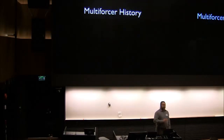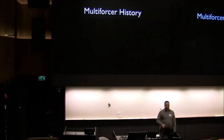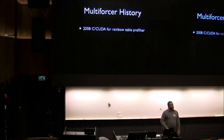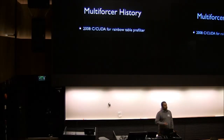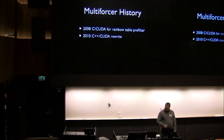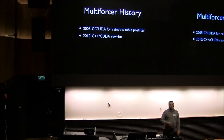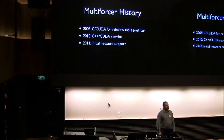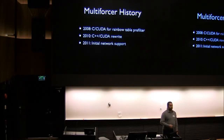The password brute-forcing tool that I have is the Multi-forcer — I apologize for the names, I'm terrible at them, if anybody has better suggestions find me later. Back in 2008, I actually started writing these as a pre-filter for the rainbow tables to deal with smaller password spaces. In around 2010 it was rewritten as the CryptoHayes Multi-forcer with a C++ framework. It was still CUDA only at this point. In around 2011, I played around with some network support because I realized that scaling single systems was going to be a problem sooner rather than later.